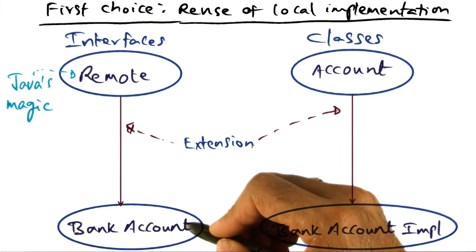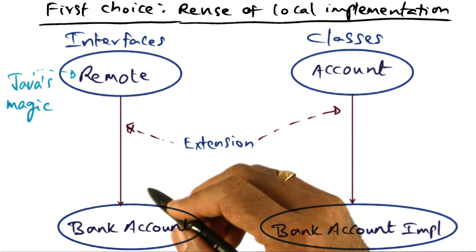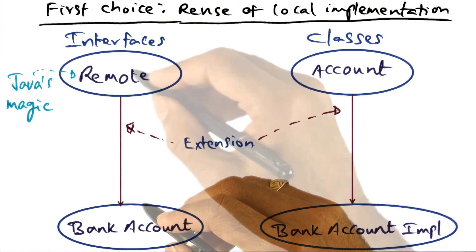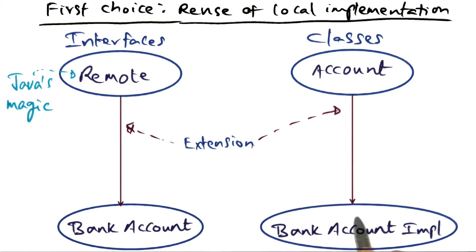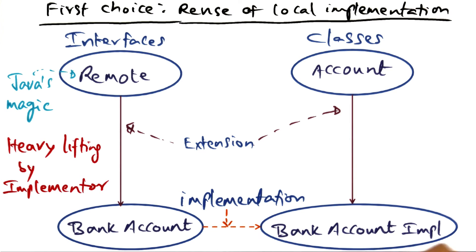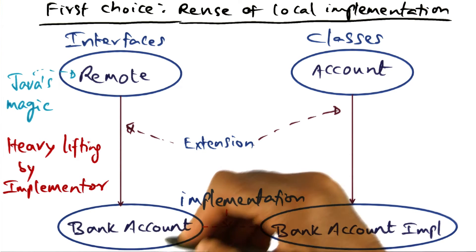This interface becomes publicly available for anyone to access. Clients on the network can have access to this BankAccount interface. Now she instantiates this BankAccount implementation. When the BankAccount implementation is actually instantiated, the location of the BankAccount implementation object — the instantiation she has done — is not visible to the client.